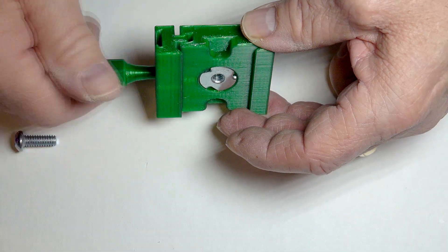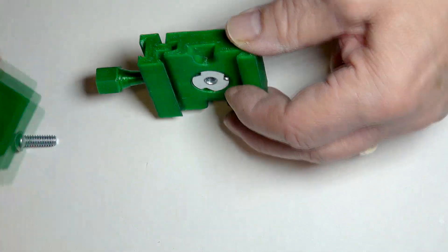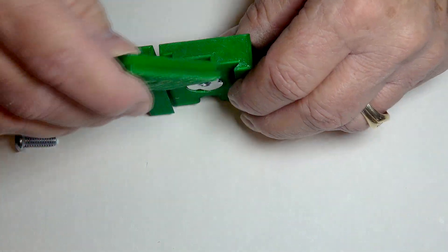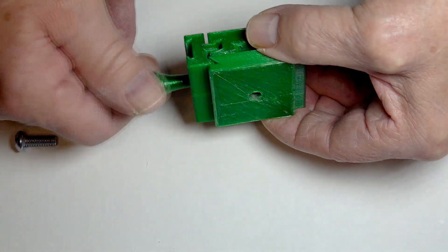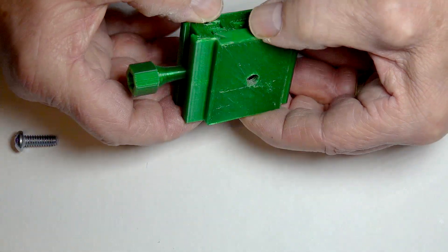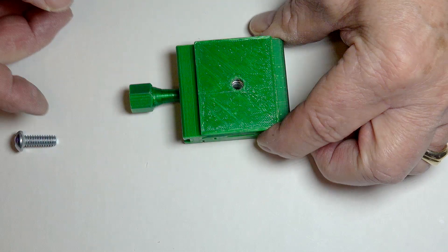You can now use the knob to open and close the jaw for the quick release plate. Don't over tighten the jaw since you might strip the threads created in the base when you screwed in the 6-32 machine screw. It doesn't take much pressure to hold the plate firmly.